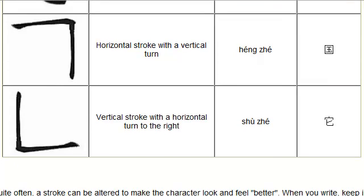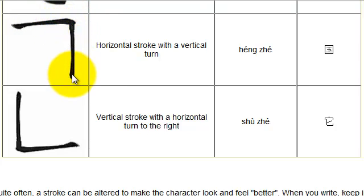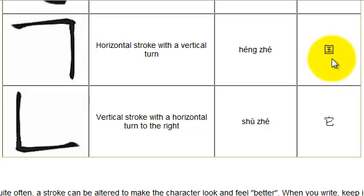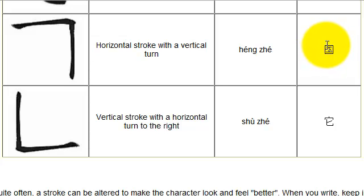Next is heng zhe. Heng zhe is a horizontal stroke with a vertical stroke. You start at the top left, draw horizontally to the right, and then down to the bottom. This looks like a square, but when you draw this character you must start at the top left, draw to the right, and then down towards the bottom.